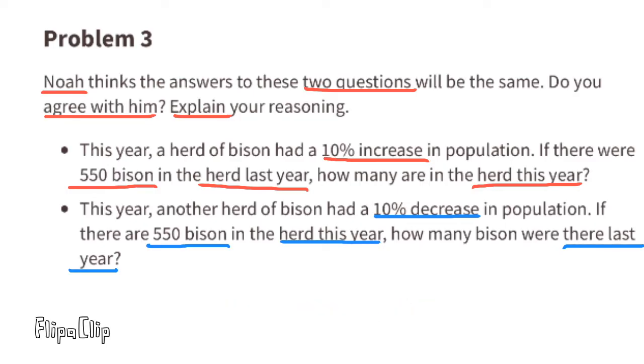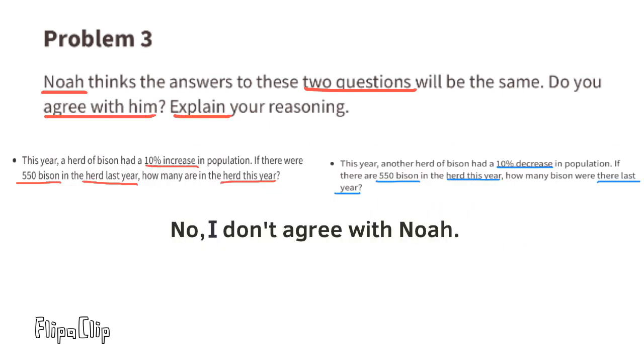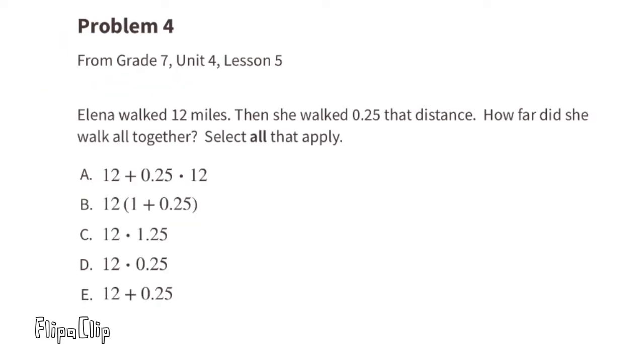Now let's take a look at the second question. This year another herd of bison had a 10 percent decrease in population. If there are 550 bison in the herd this year, how many bison were there last year? This information tells me that there are 550 bison this year. We figured out that with the other question there are 605 bison this year. That means that the two answers are going to be different. No, I don't agree with Noah.